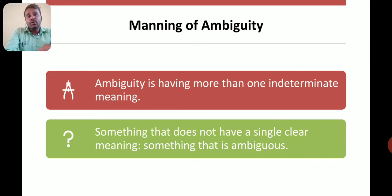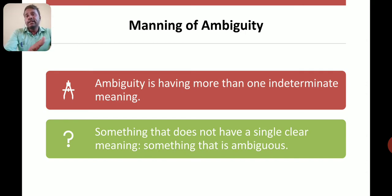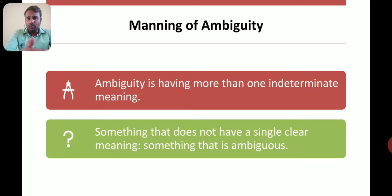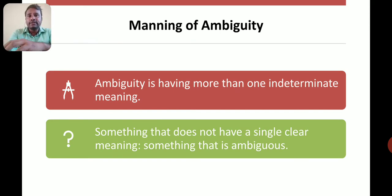Ambiguity is having more than one indeterminate meaning. It is having more than one meaning — something that does not have a single clear meaning. Something that is ambiguous is not having one clear, single meaning.